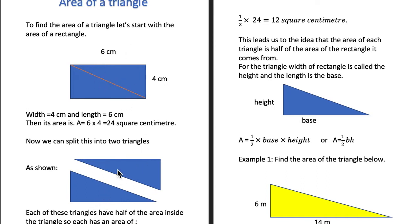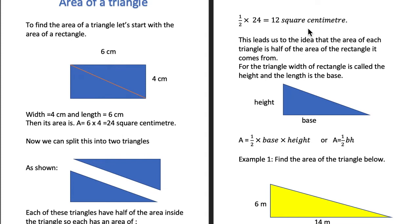Each one of these triangles will have only half of the area of the rectangle they are coming from. So the area of each of them will be half times the area of the rectangle, which is 24. Half of 24 gives us 12 square centimeters, so each triangle here has an area of 12 square centimeters.